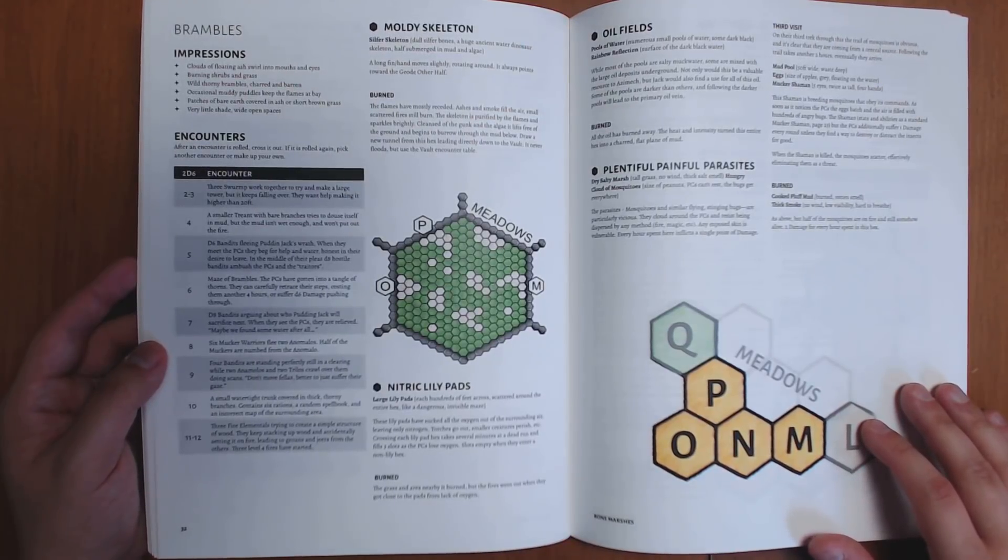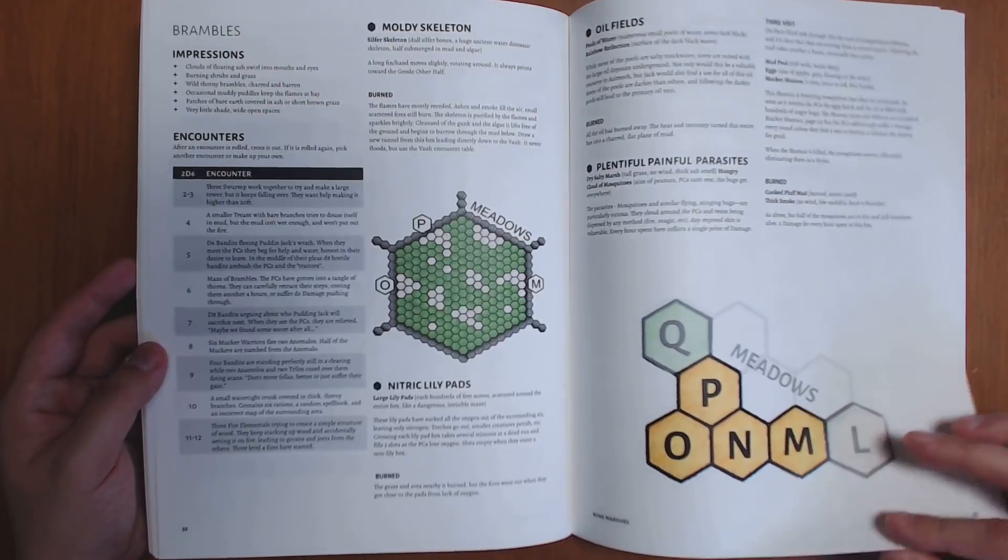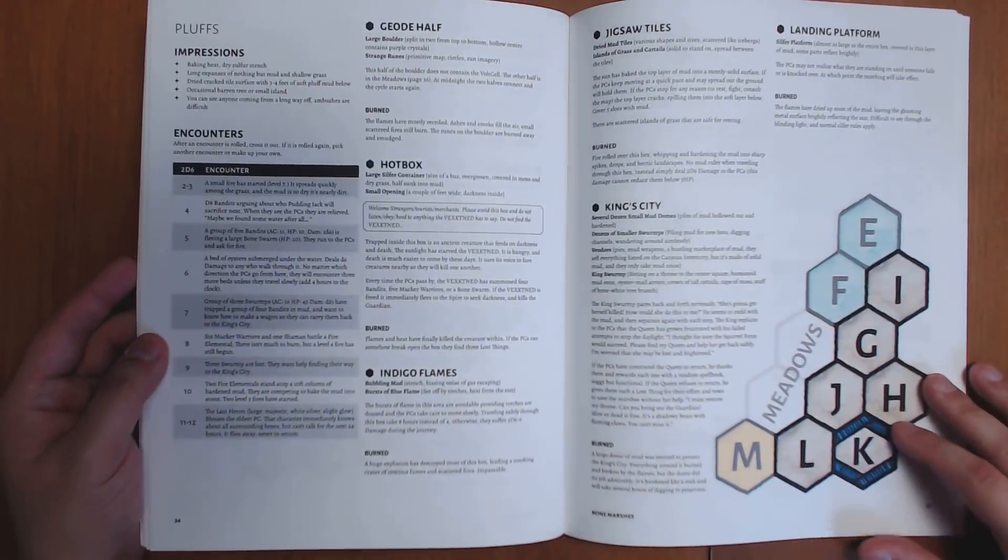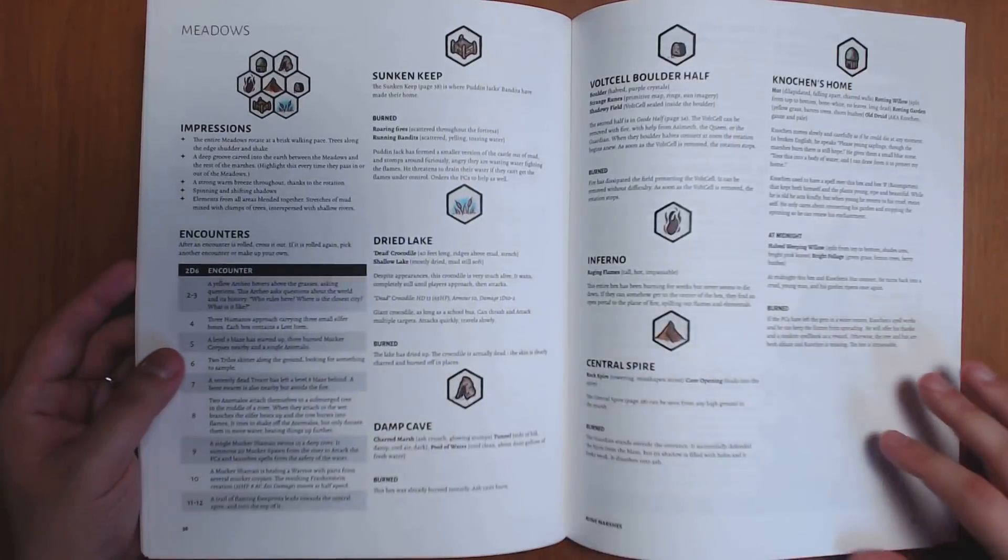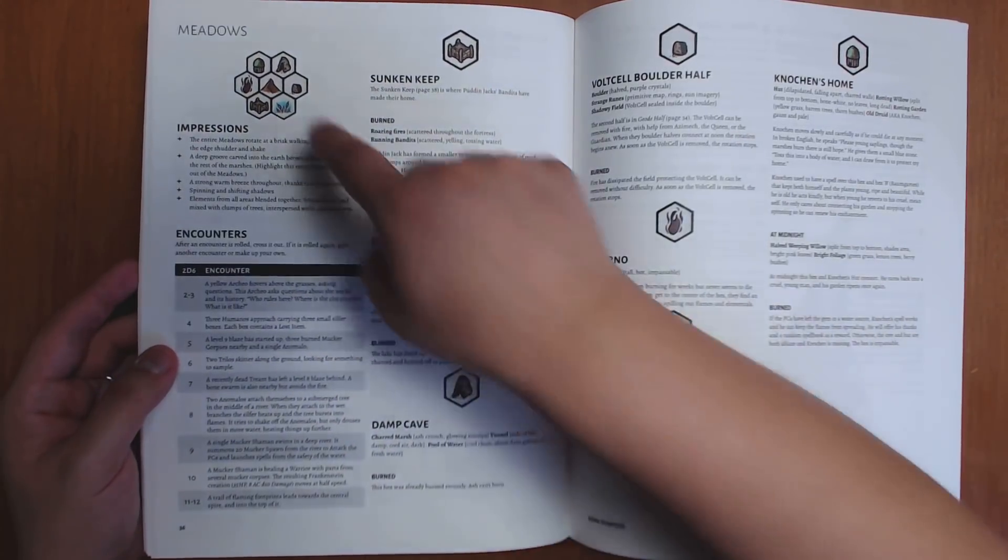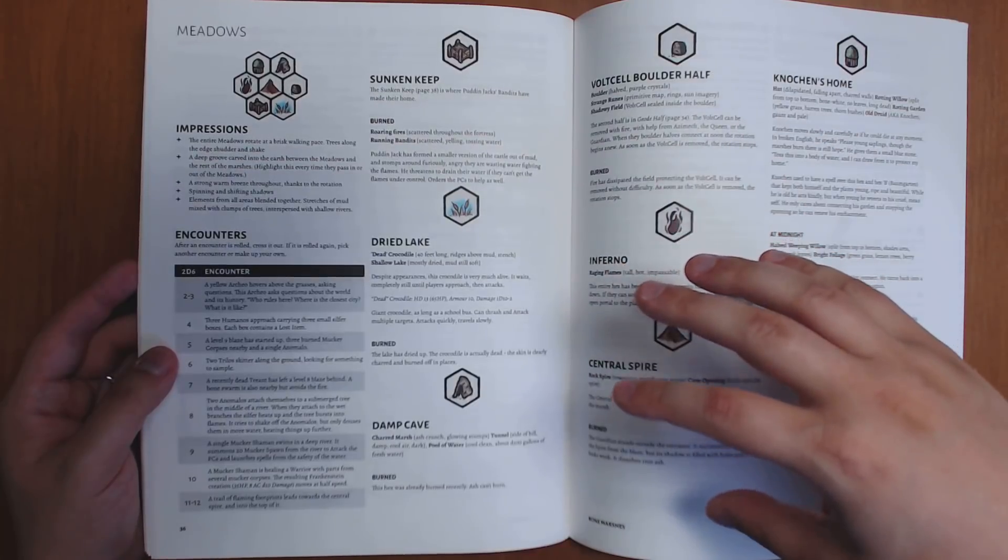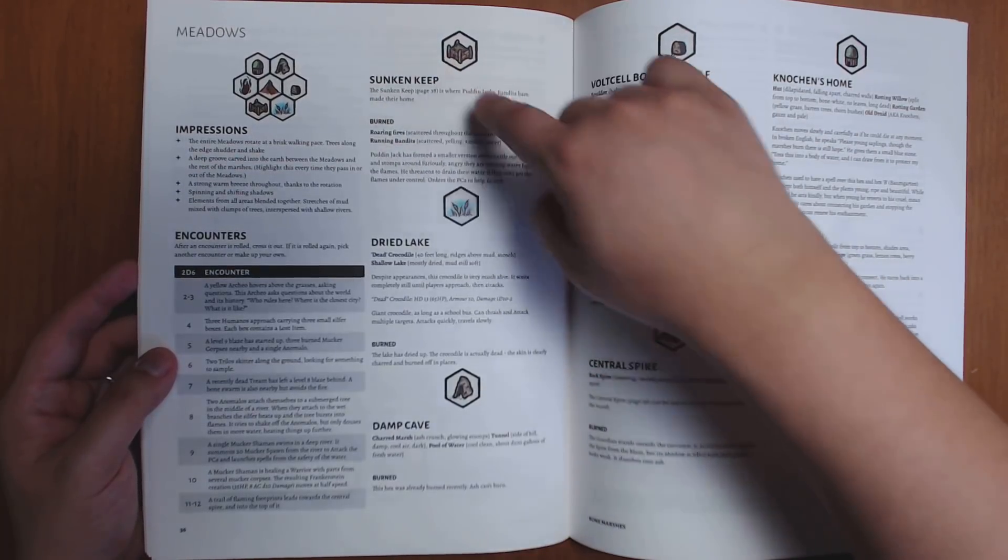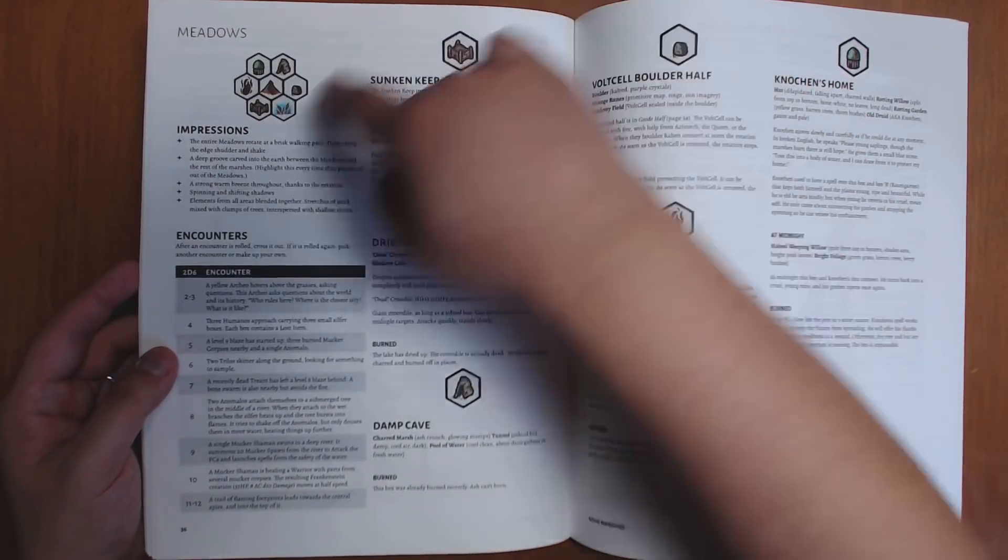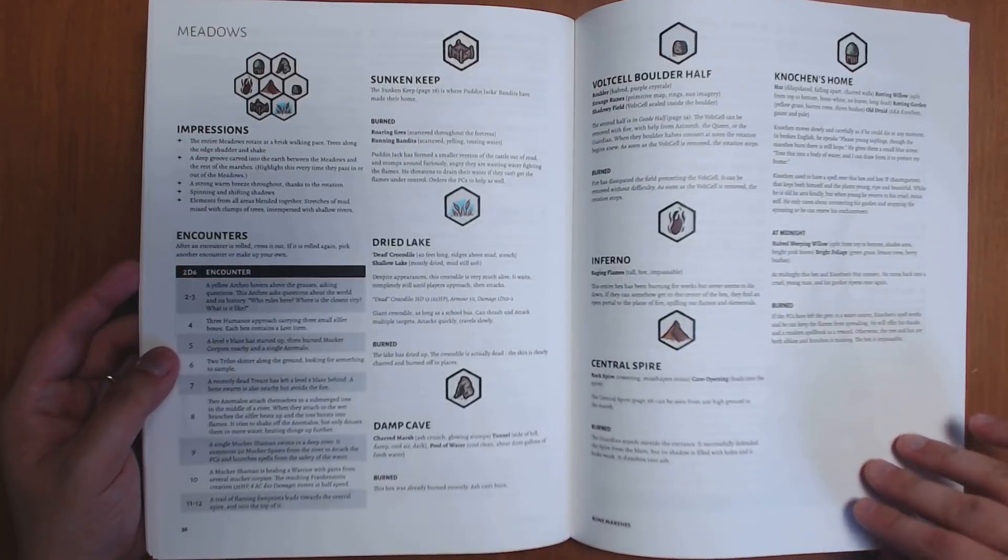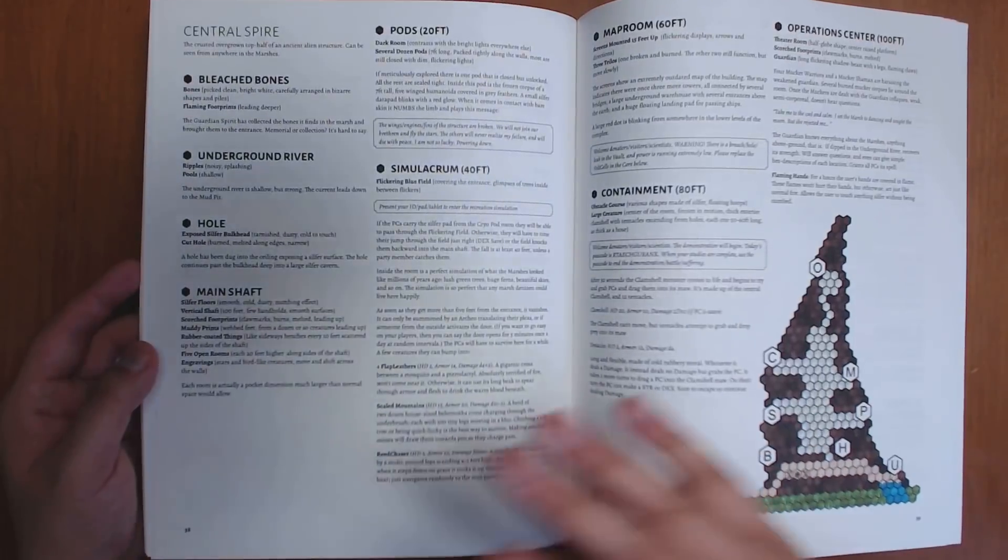We have this section, the brambles, again with its own encounter table. And we have the meadows. So this would be the seven hex section in the middle that's slowly rotating. And each of these has a little picture above it that tells you which hex it's talking about. You can just look at it visually. But each of these is fleshed out much more clearly later on.